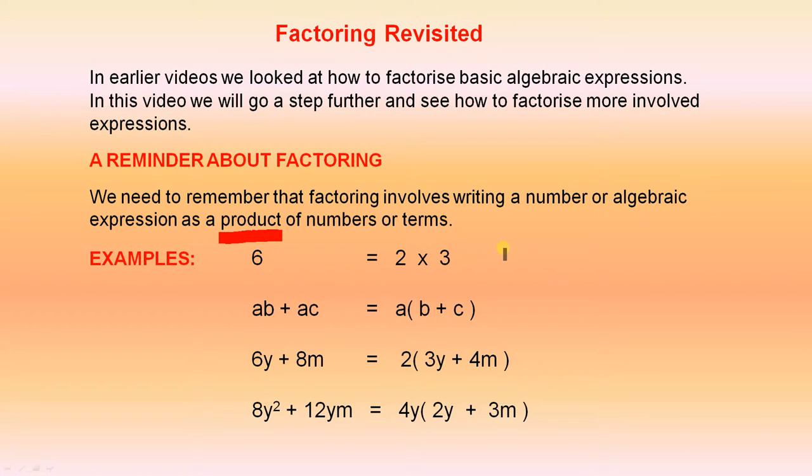Here are some examples. 6 is the product of 2 and 3. That's quite straightforward. AB plus AC is the product of A and B plus C.